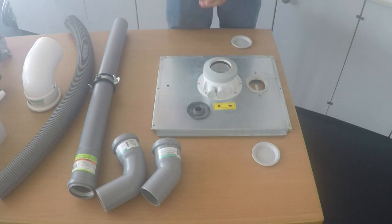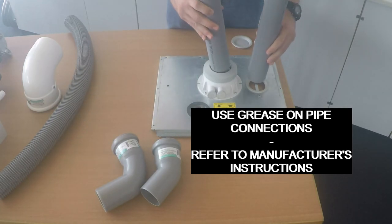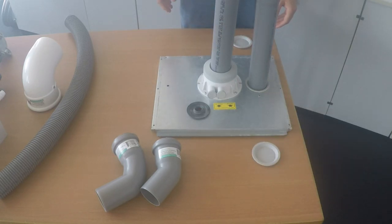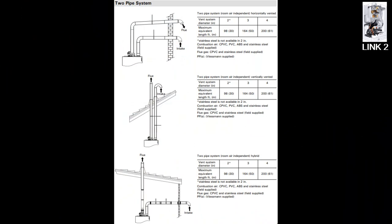And then you will take your two pipes, the air intake and your flue pipe, and you will put them into the boiler like so. Here in this figure, you can see the maximum lengths for the two pipe system.